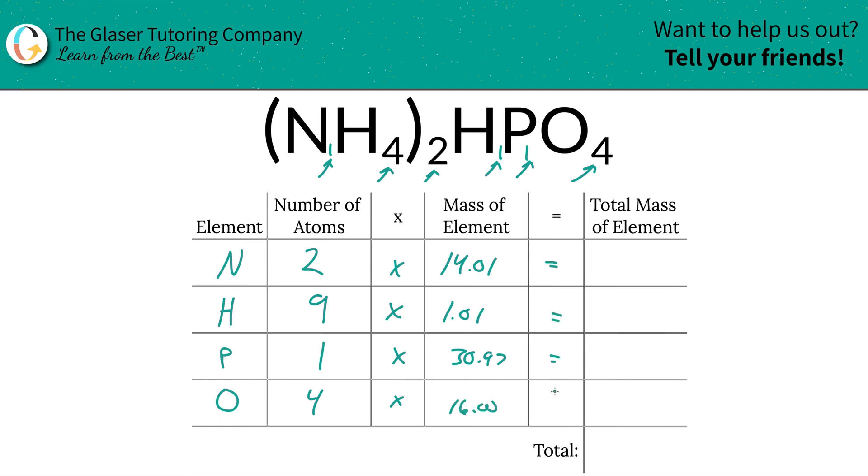And then to find the total mass of the element in the compound, we're simply going to multiply this row across. So that works out to be 28.02 units of mass for nitrogen. Hydrogen is going to be 9.09. Phosphorus is 30.97, and oxygen therefore will be 64.